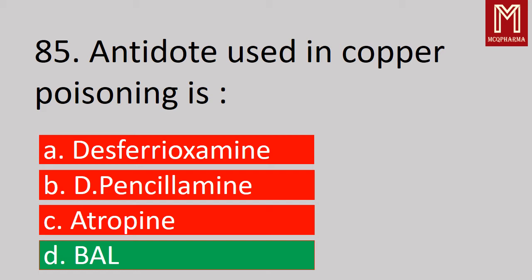Next, antidote used in copper poisoning is — correct answer, Option D: BAL. BAL is a heavy metal chelating agent used to treat poisoning with arsenic, gold, copper, mercury, etc.